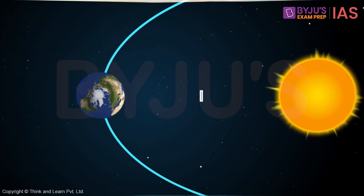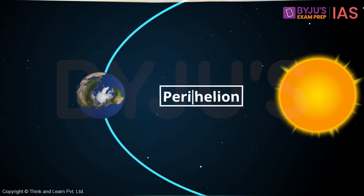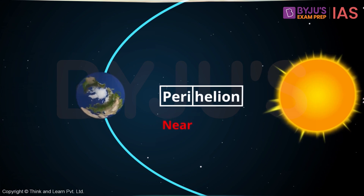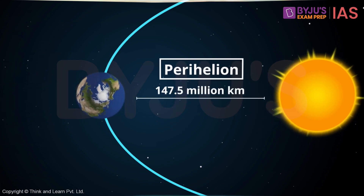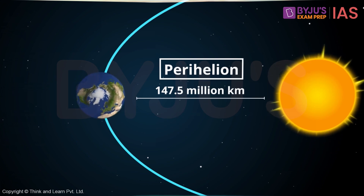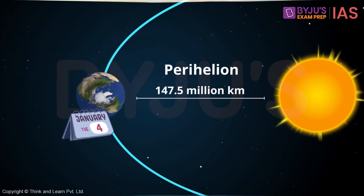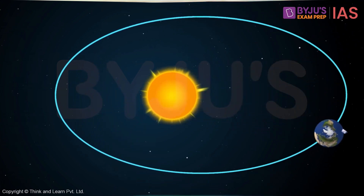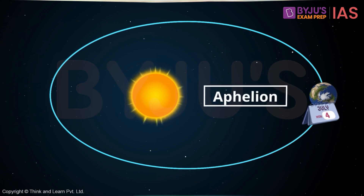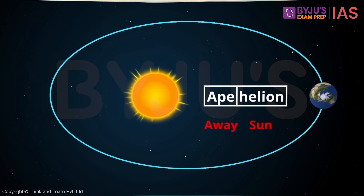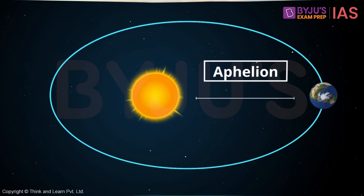When the Earth orbits around the Sun and is closest to it, this position is called perihelion. 'Peri' in Greek means near, while 'helios' refers to the Sun. At this point, the Earth is about 147.5 million kilometers from the Sun, and the date is roughly around January 4th. On July 4th, the Earth is at its farthest position from the Sun — this is known as aphelion. 'Apo' means away, and the distance at this position is around 152.6 million kilometers.